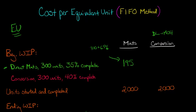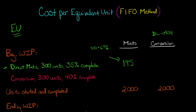The reason we multiply by 65% and not 35% is because 35% was done in the last period — that's the past. What we need to know is how much of the beginning work in process we're going to be doing in this period. If we've already done 35%, we just need to do 100% minus 35%, which is 65% — that's what remains to be completed. So we've got 195 for direct materials.